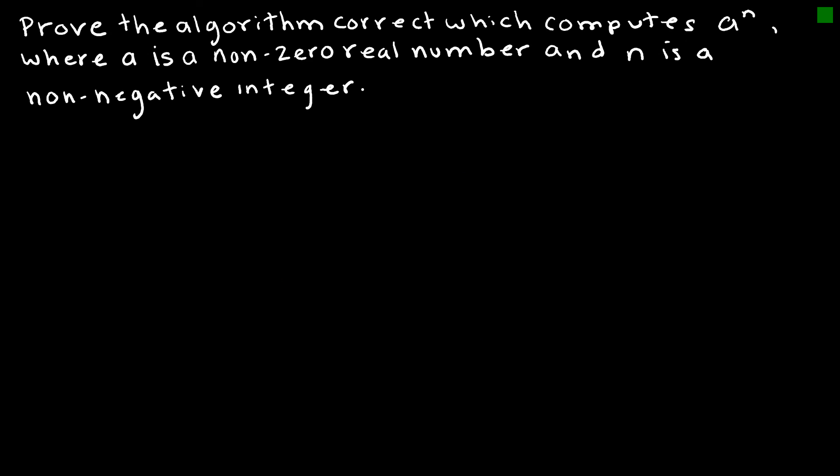So let's just look at one proof using mathematical induction. We're going to prove the algorithm correct which computes a to the n, where a is a non-zero real number and n is a non-negative integer. That's the algorithm we just looked at, so I didn't recopy it for you. But again, the basis step says, hey, a to the 0 equals 1 for every non-zero real number, and the power of a and 0, which means a to the 0 equals 1. And that is true, and therefore, the basis step is proved.